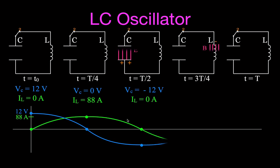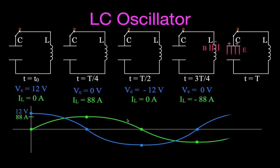Over the third quarter cycle, the capacitor discharges back through the inductor. The energy goes back to the inductor and the voltage across the capacitor returns to zero. When fully discharged, the current is at its maximum of minus 88 amperes — the minus sign meaning the current is now flowing in the opposite direction. Then over the final quarter cycle, we complete one full oscillation: the capacitor returns to its original polarity at 12 volts and the current is back to zero. In an ideal circuit this just continues back and forth indefinitely.